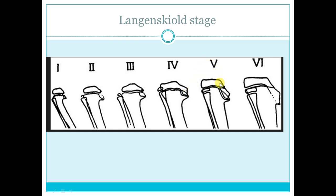In type 4, the epiphysis follows the metaphysis. Type 5 shows two physes — one between the epiphysis and metaphysis, and one between the separated part of the epiphysis — then bar formation. Of course in types 5 and 6, you have to elevate the depressed segment. Please don't correct with valgus osteotomy only without elevation, or you will end up with a horrible post-op X-ray.